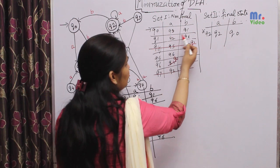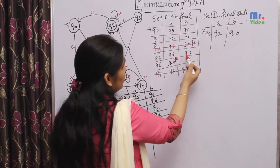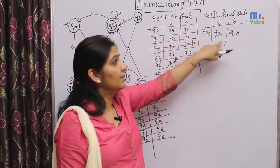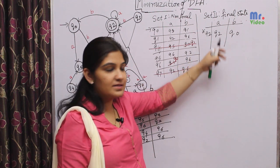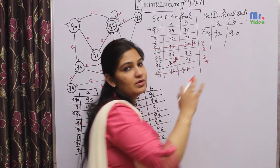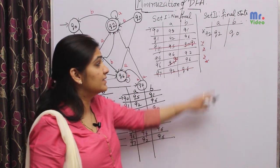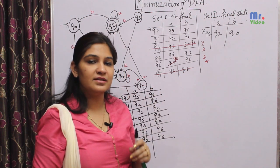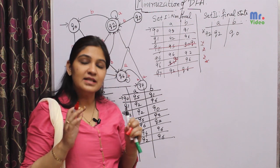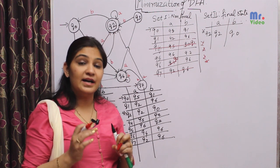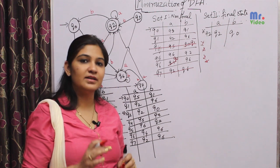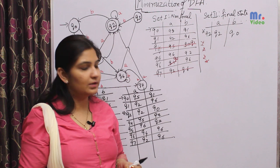We then check again for any remaining indistinguishable states. In this case, there are no more to find. There is only one final state, but if there were multiple final states, we would also check among them for indistinguishable pairs. Indistinguishable states must have similar transitions for all inputs and must both be either final or non-final before we can declare them indistinguishable.